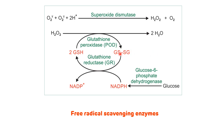Oxidized glutathione is converted back to its reduced form by glutathione reductase, which requires NADPH as a coenzyme. This NADPH comes from the HMP shunt pathway, where it is synthesized by glucose-6-phosphate dehydrogenase. In G6PD deficiency, there is insufficient NADPH, so there is no synthesis of reduced glutathione, which is why RBCs are more prone to hemolysis in G6PD deficiency.